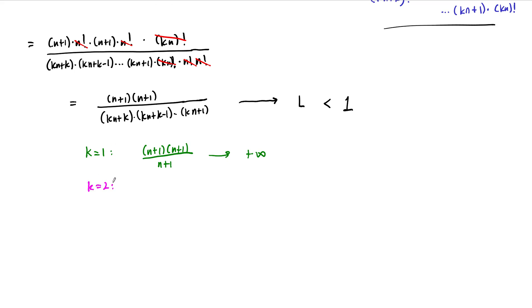Let's go to k equals 2, see what happens there. So now we've got n plus 1 times n plus 1 on top. On the bottom, we have 2n plus 2 times 2n plus 1. And if we were to multiply this out, this looks like n squared plus 2n plus 1 on the top. On the bottom, this is 4n squared plus 4n plus 1. And as n approaches infinity, this limit is 1 fourth. And so this one converges, no problem.